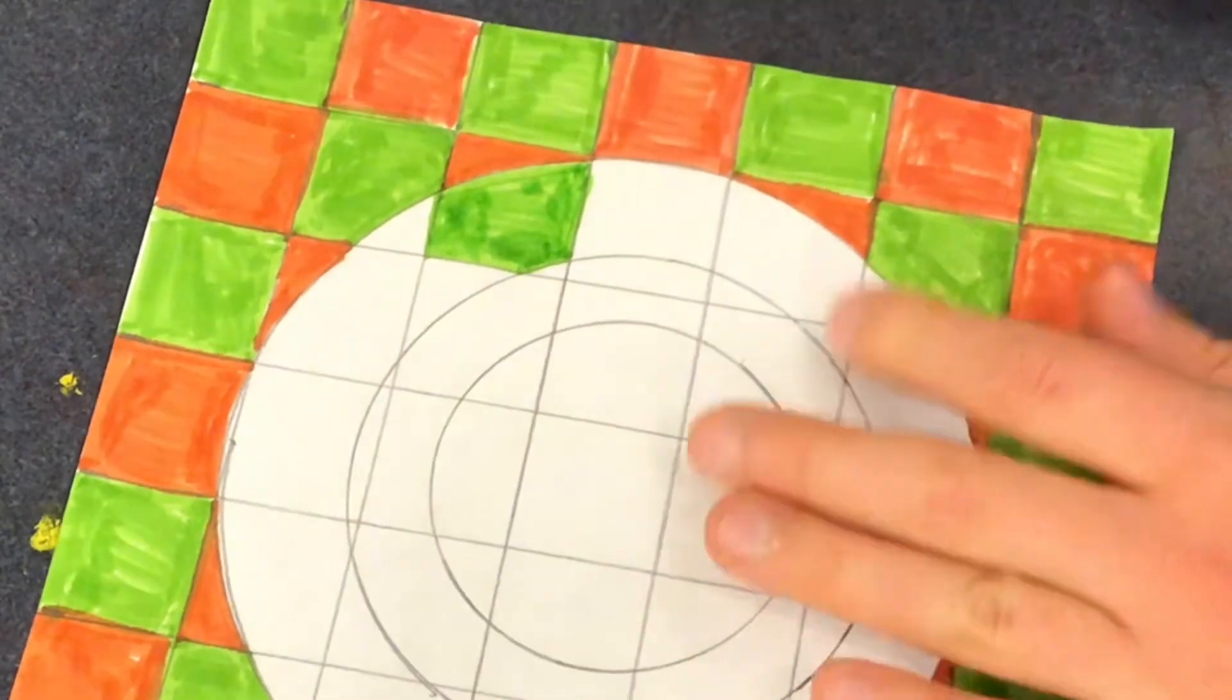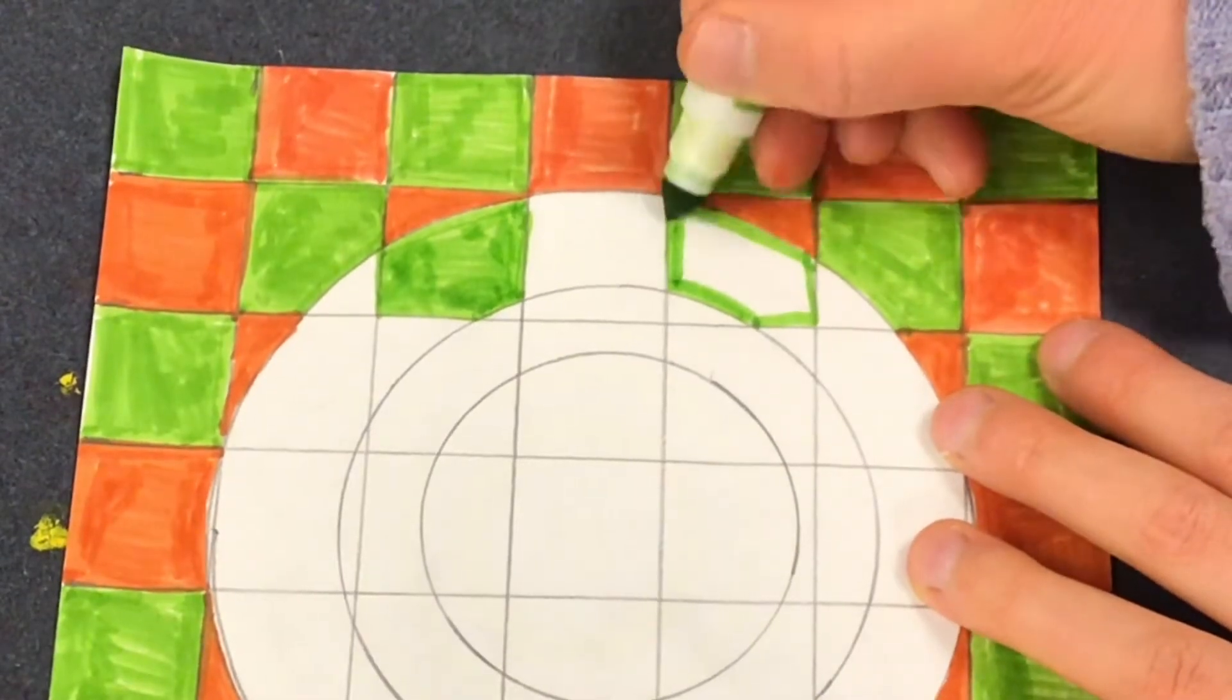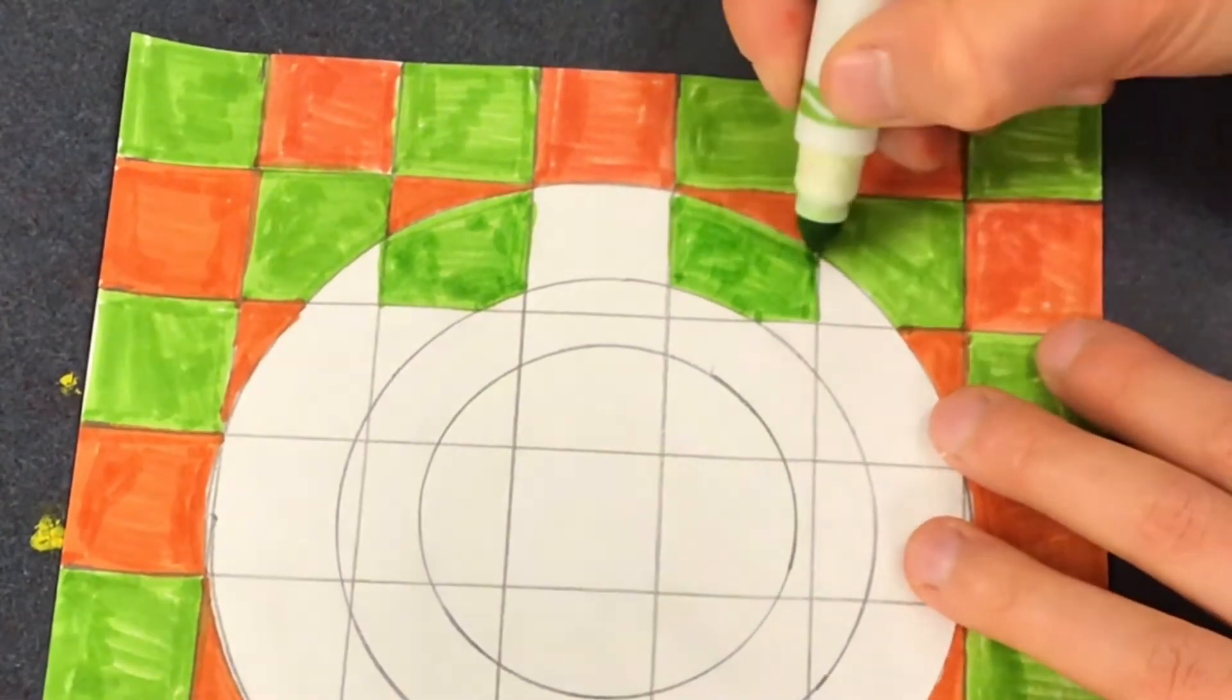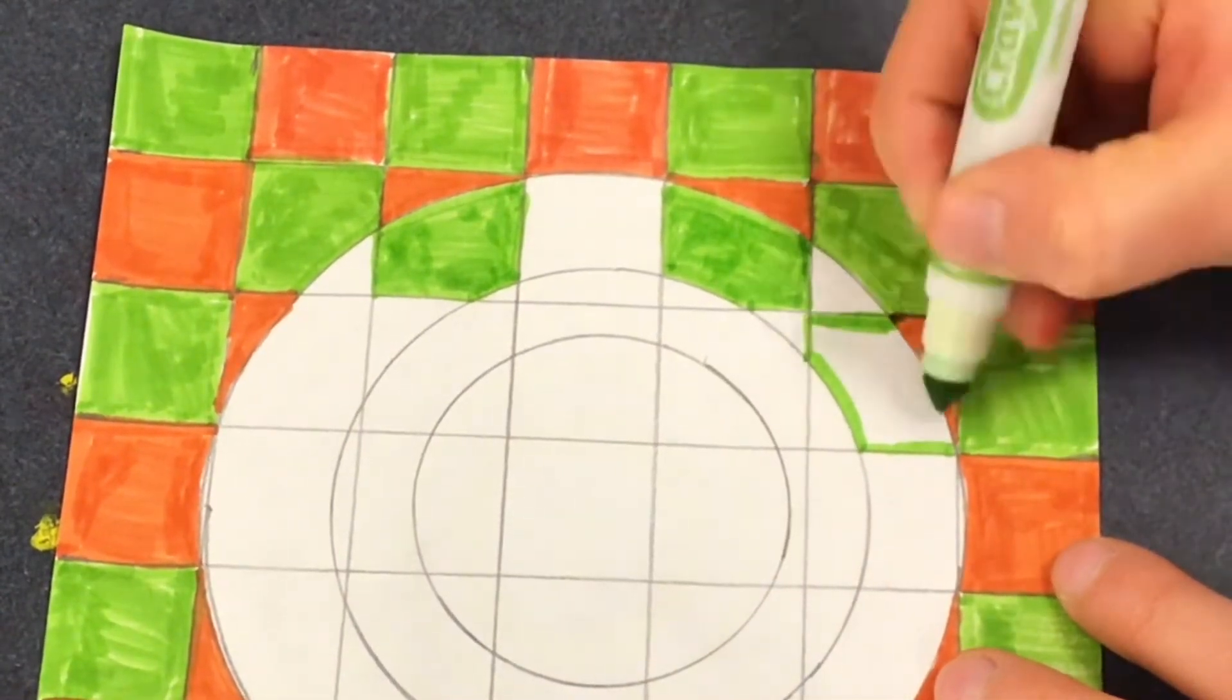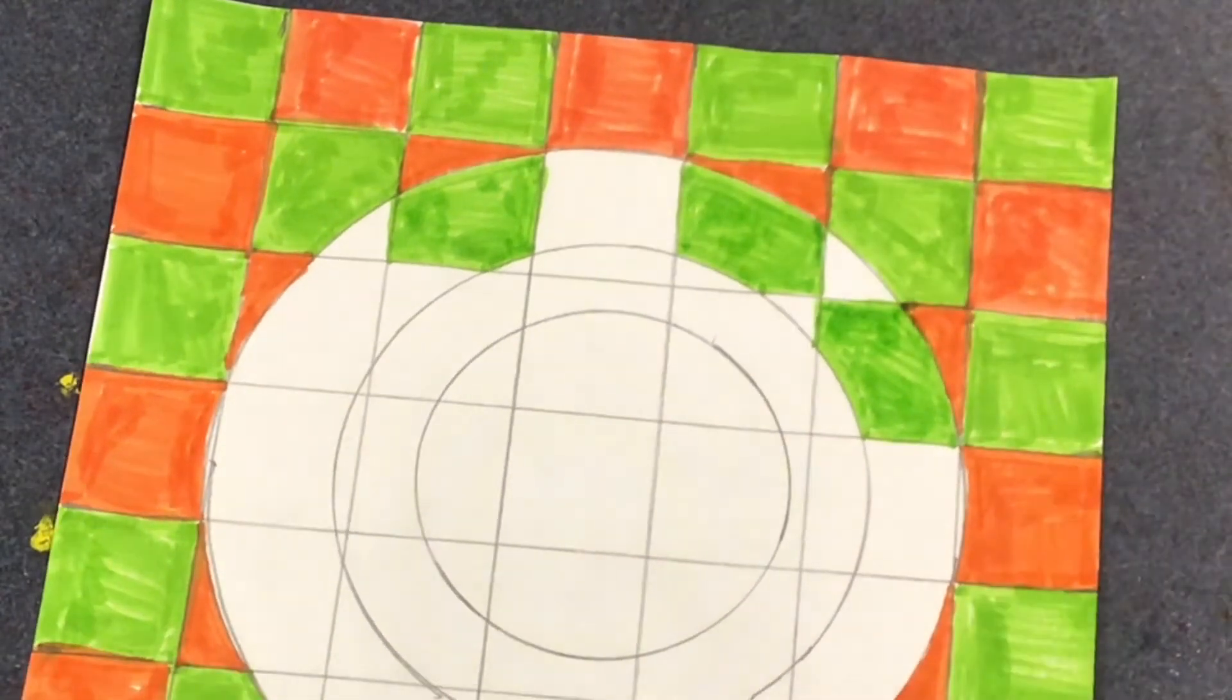So now this square is part orange part green. Same with this one. Again we're coloring in a checkerboard pattern. It's a little bit more complicated though because we're going ring by ring inside the circle. So there's going to be a lot of partial squares here.